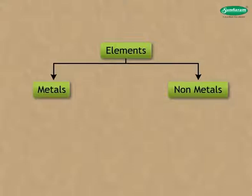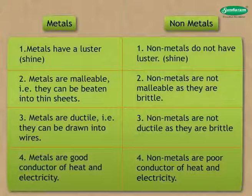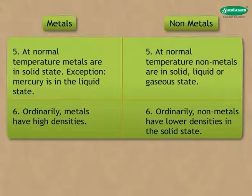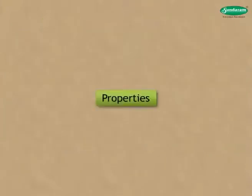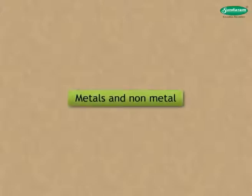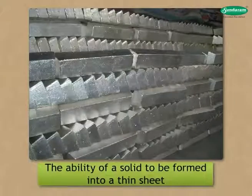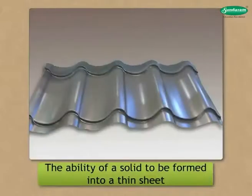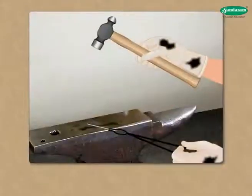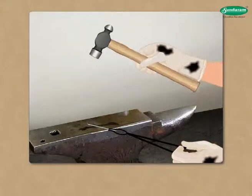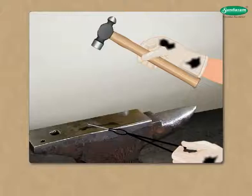Metals and non-metals differ in properties. Now we shall learn some physical properties of metals and non-metals. Malleability is a property of metals. It is the ability of a solid to be formed into a thin sheet on heating. For example, when an iron nail is beaten up with a hammer, it flattens. If we continue to do so, it becomes a thin, flat sheet.